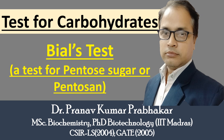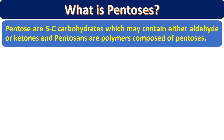This is a basic test which we are going to do for pentose sugar or pentosans. We will see what is pentose and what is pentosans. There are different types of monosaccharides. Carbohydrates can be classified into different categories like monosaccharides, disaccharides, and polysaccharides. Pentose is one of those types — a monosaccharide having five carbons.